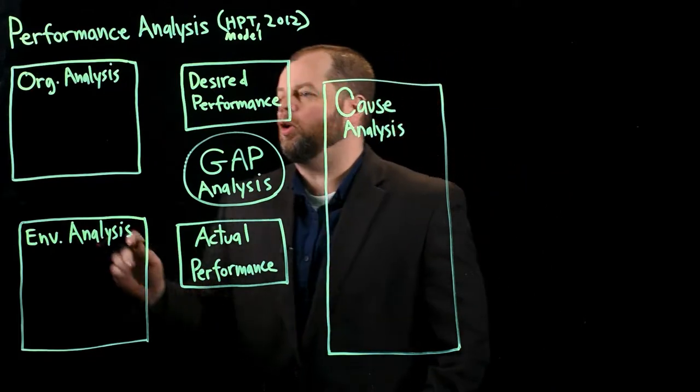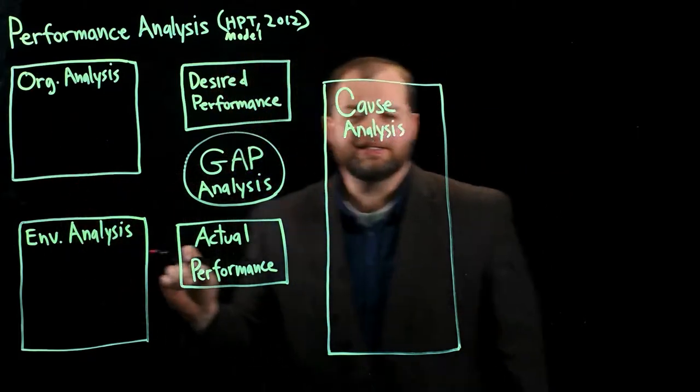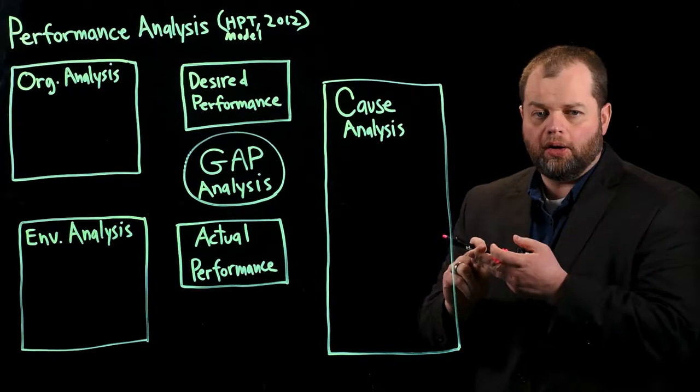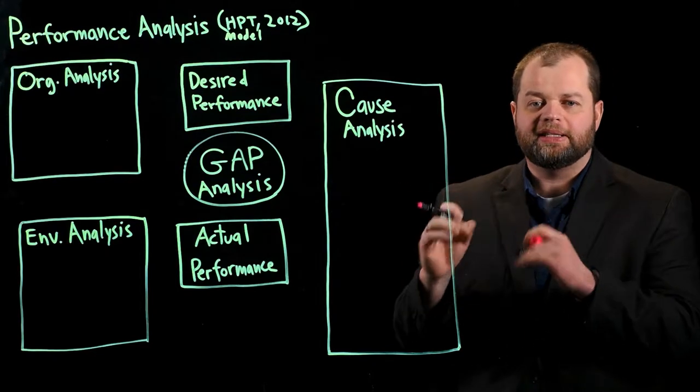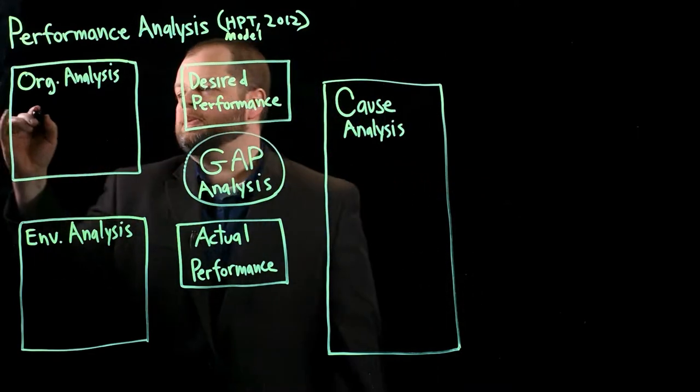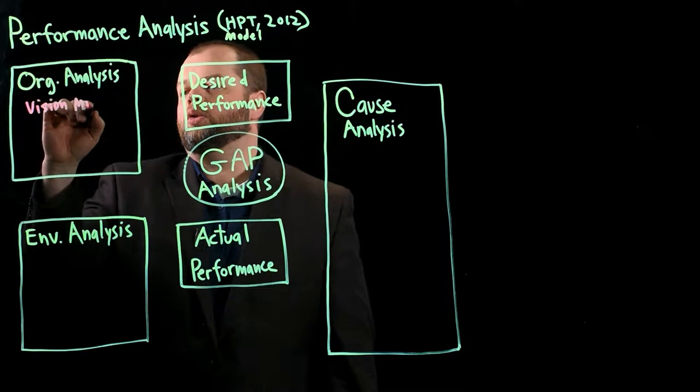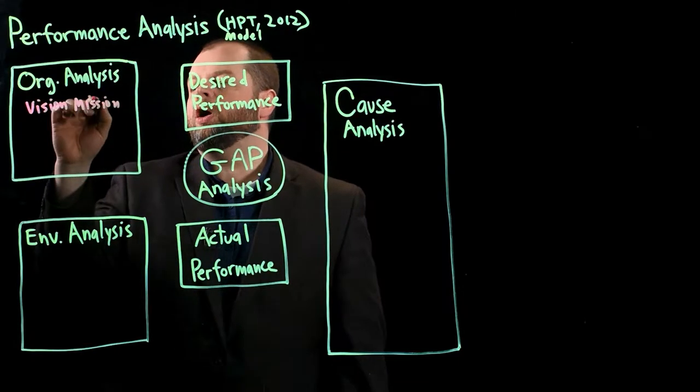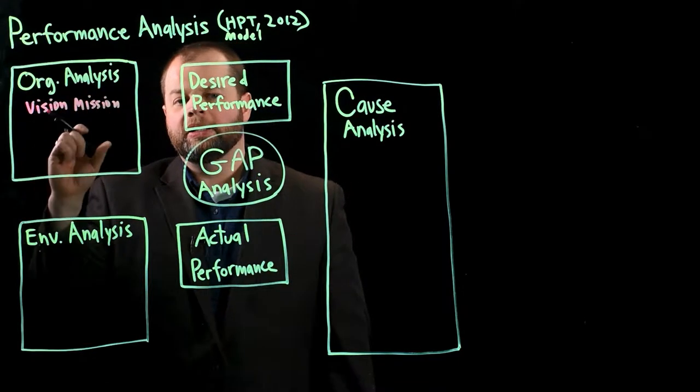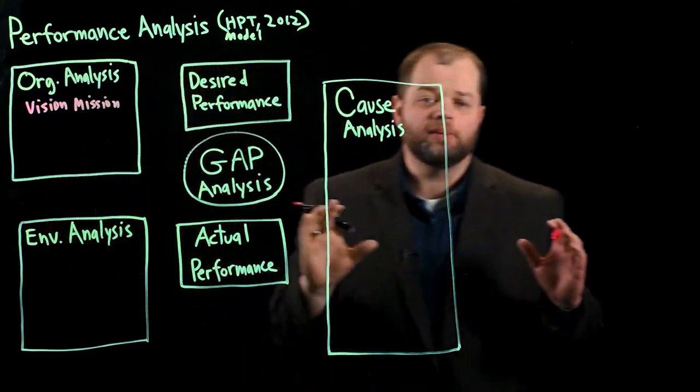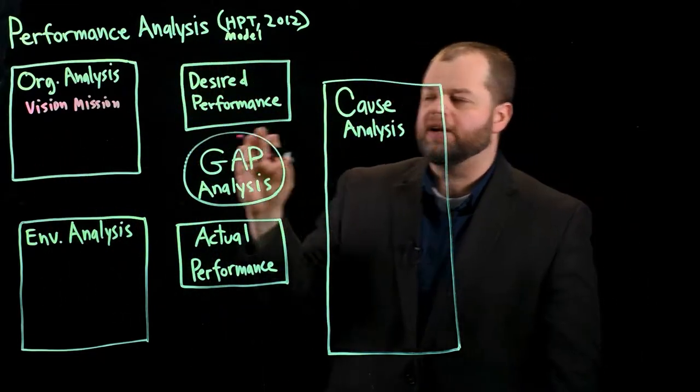So the first part here is our organizational analysis. And this is where we really get a sense for what the organization is, who they are, and the types of goals and strategies that they have. So first of all, we want to understand the vision and the mission of this organization. Who are they? What do they want to accomplish? This really helps us get a feel for that, because we need to align everything we do with the organization's desires and goals.